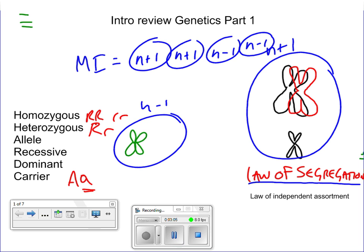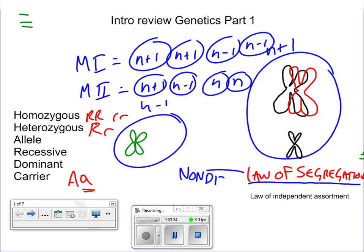If it happens in meiosis one, you're going to get N plus one, N plus one, N minus one, and N minus one. But if it happens in meiosis two, one side divided appropriately and you get more chromosomes than you're supposed to get in the cells. That's the violation of law of segregation, also known as non-disjunction.